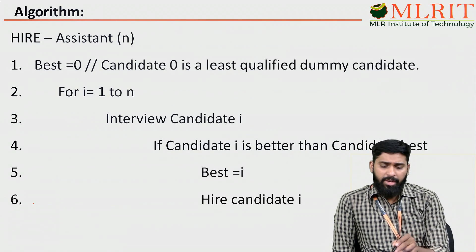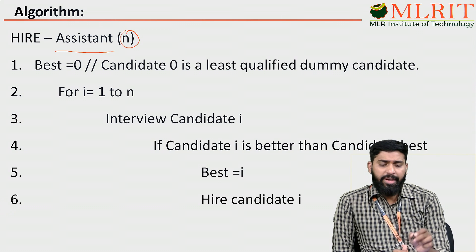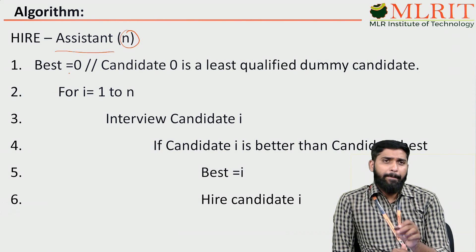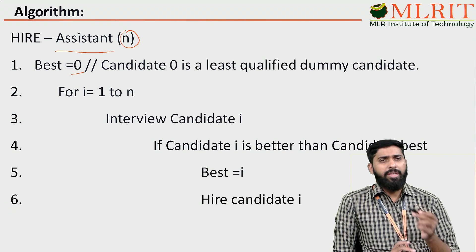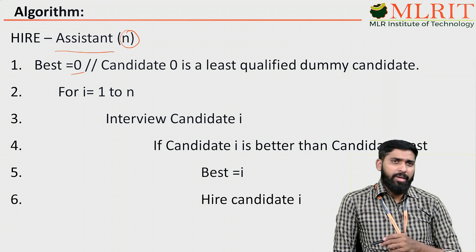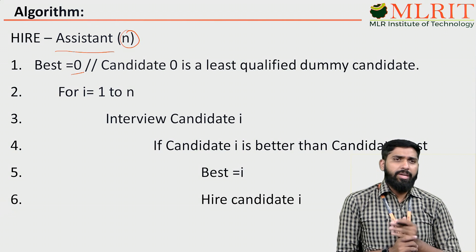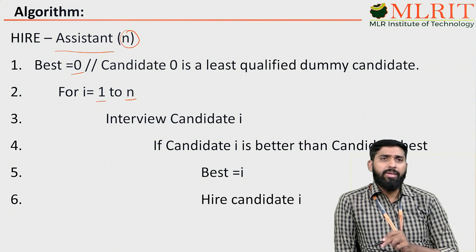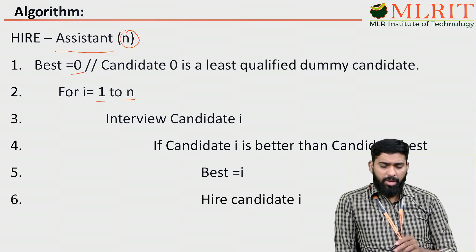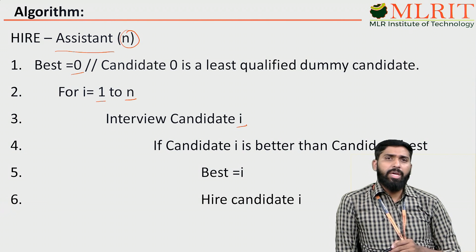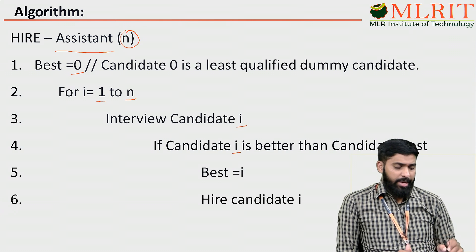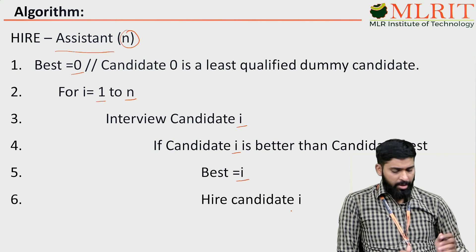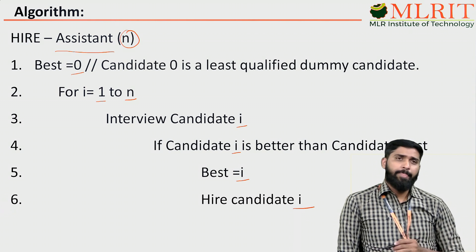Now we see the algorithm hire-assistant. There are N number of candidates. Initially we take a dummy variable: best equals to 0. That means initially candidate 0 is the least qualified dummy candidate — before the interview, there is no candidate, so we assign 0 to best. Now we conduct interviews for i from 1 to N. We interview candidate i. If candidate i is better than candidate best, then we assign i to best and hire candidate i. This is the algorithm.